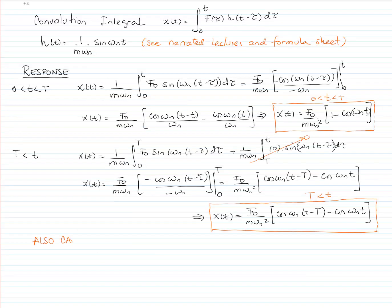We can also write our response if we convert m times omega n squared as k, we can say that our response is equals to from t greater than 0 and less than capital T, the response will be F sub 0 over k, which as you recall is the static deflection, 1 minus cosine omega n t.